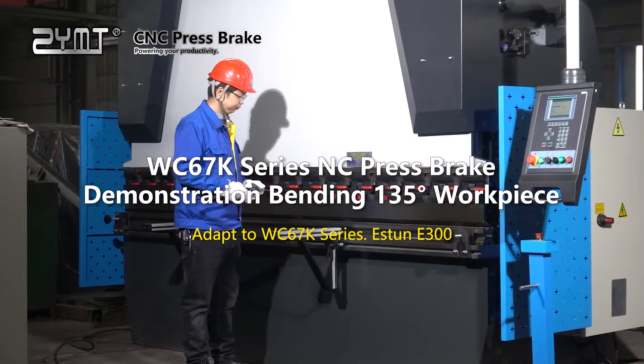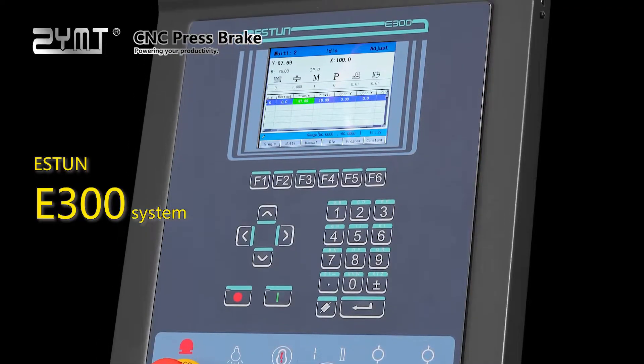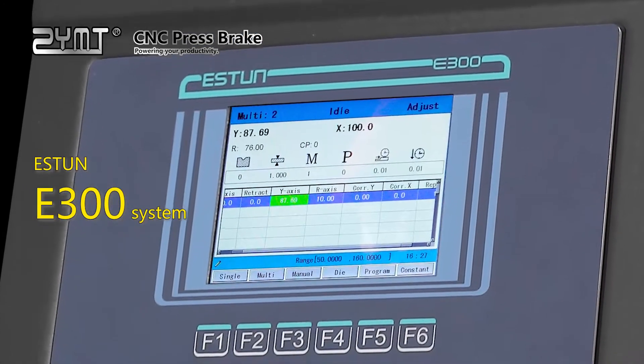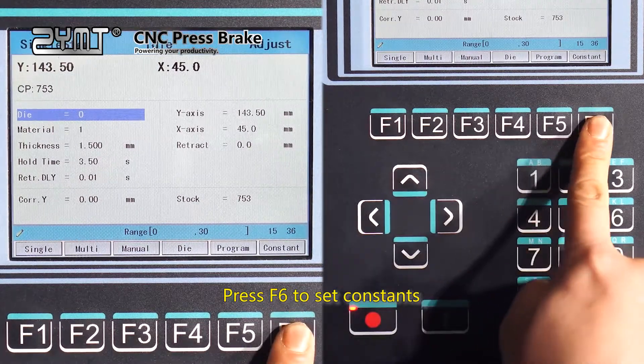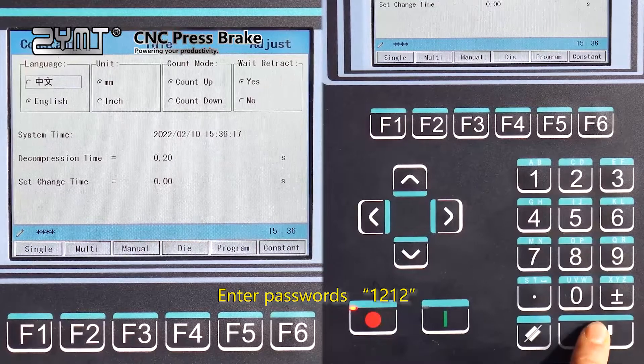Demonstration bending 135 degree workpiece. ESTUN E300 system. Press F6 to set constants. Enter password 1212.